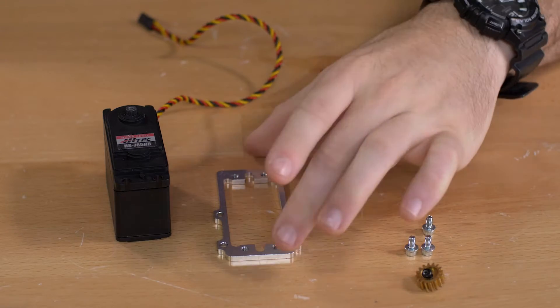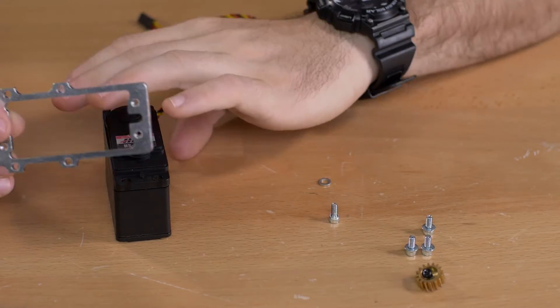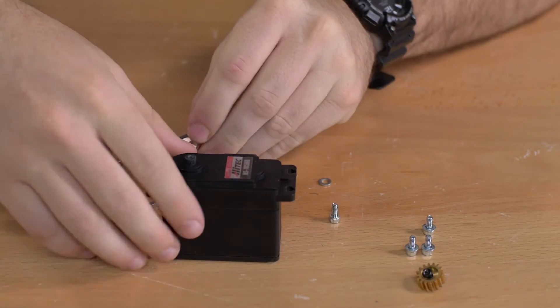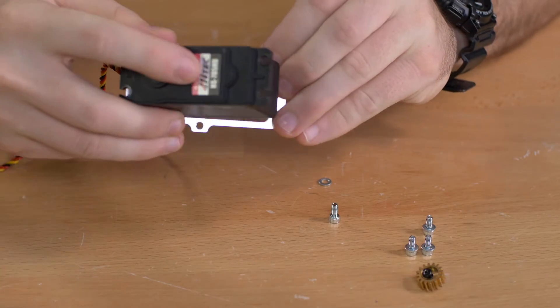For the first step we're going to attach the servo plate to the top of the servo. To do that we will slide the servo plate through the servo wire so that it comes in through the bottom of the servo.